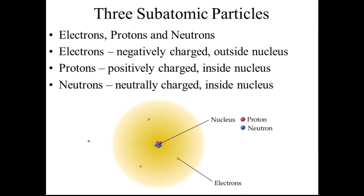There are three subatomic particles that we're going to talk about. We will be exposed to some smaller particles — these subatomic particles are actually made of smaller ones. For now, we'll focus on electrons, protons, and neutrons. You should know what they are, where they're located, and what their charge is.